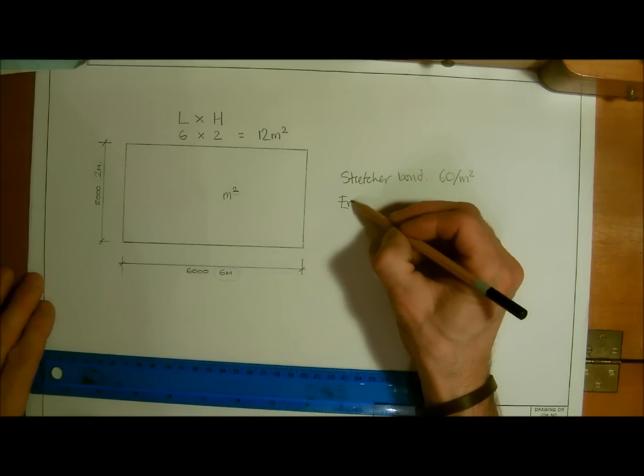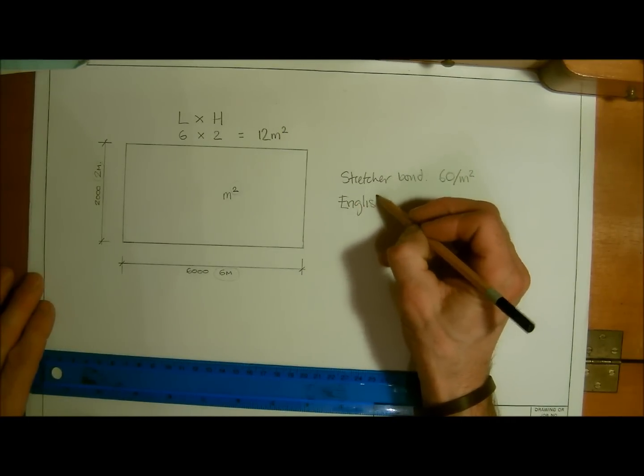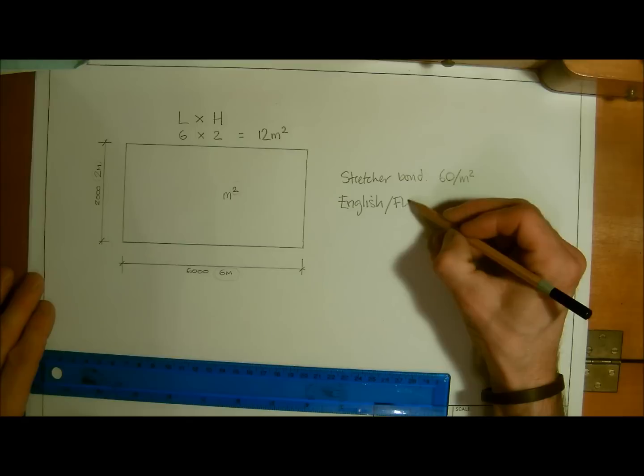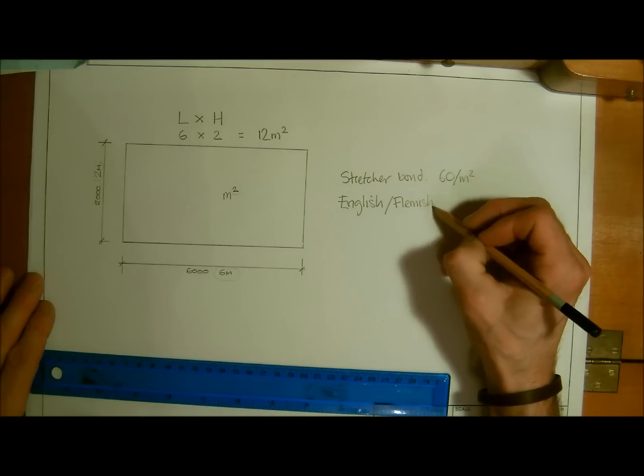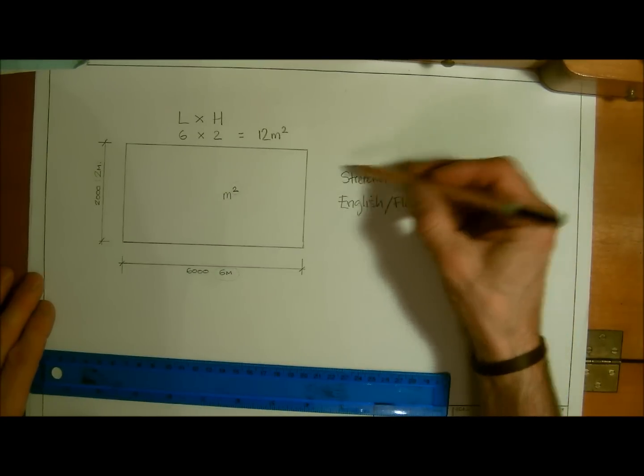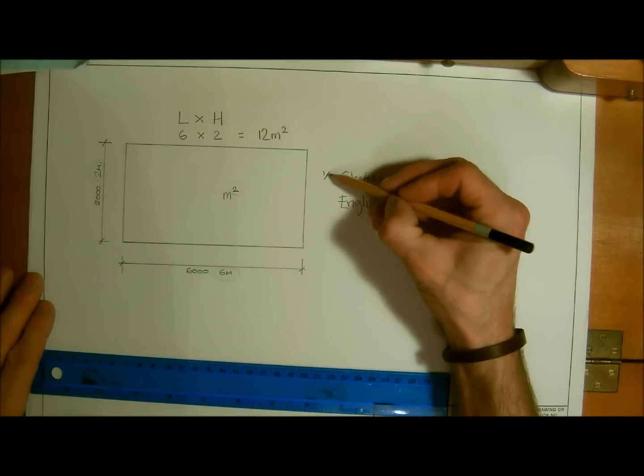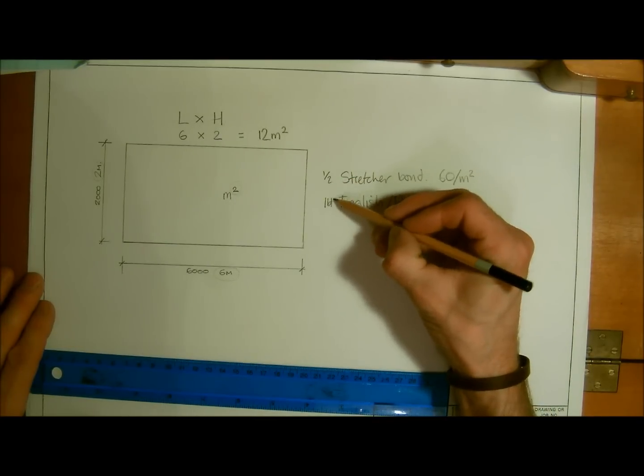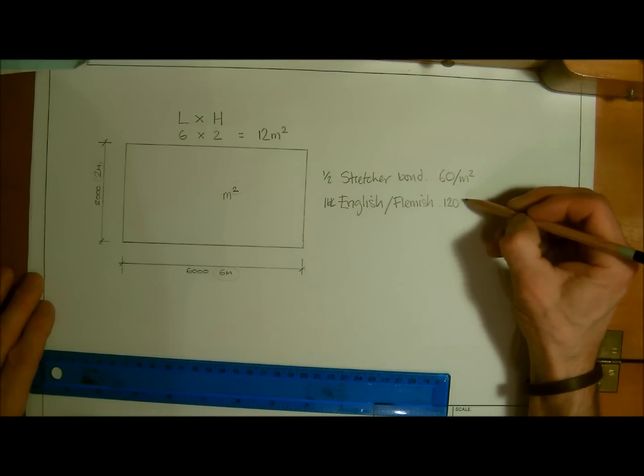So then if we have English or Flemish bond, and normally they are one brick thick, which obviously stretcher bond is only half a brick thick. This will be one brick thick. So it will obviously be double the amount of bricks.